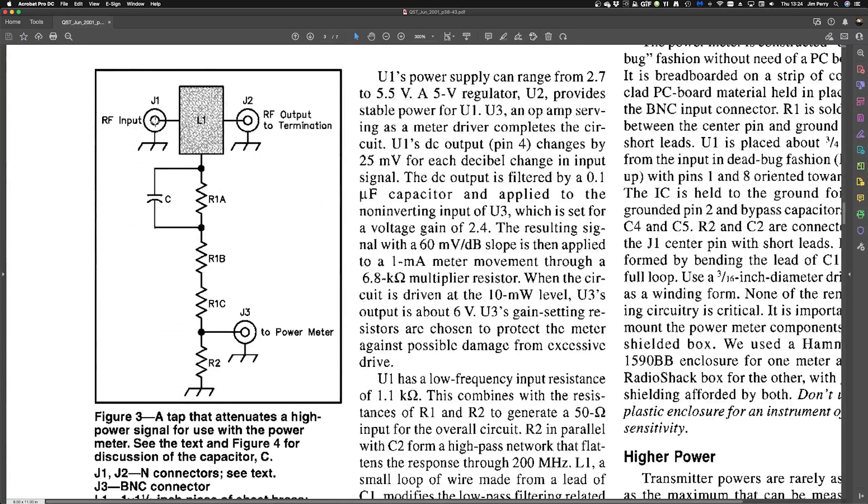And the RF tap is pretty straightforward. Here, where the blue line is thoughtfully highlighting for us, we have RF input listed, J1, and RF output, J2. These are, in the article, N-type connectors, I'm using SO239s. You could use BNC, or whatever you want to use, but I'm using SO239s.